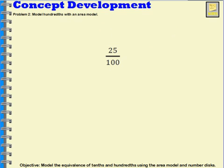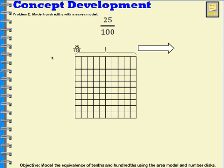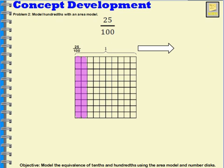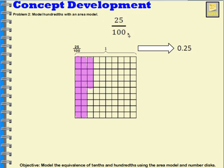Let's use an area model like this. If I want this area model to show twenty-five hundredths, what I would need to do is shade in ten, then twenty, and then shade in five more. So now this area model is showing twenty-five hundredths. If I want to write that as a decimal, it would be zero point two five — twenty-five hundredths. When I read this decimal, I read it just like this fraction.